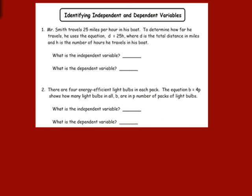Mr. Smith travels 25 miles per hour in his boat. To determine how far he travels, he uses the equation d equals 25h, where d represents the total distance in miles and h is the number of hours he travels. So the independent variable is h, and the dependent variable is d — because how far Mr. Smith travels depends on how many hours he's in his boat.